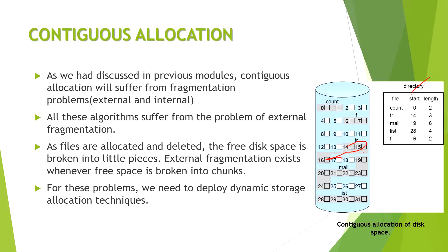Contiguous allocation has a disadvantage: it suffers from external fragmentation. We may have sufficient total space for an incoming file but not sufficient contiguous space, so the file cannot be stored. This problem is called external fragmentation. Because of this, we need to deploy dynamic storage allocation techniques.